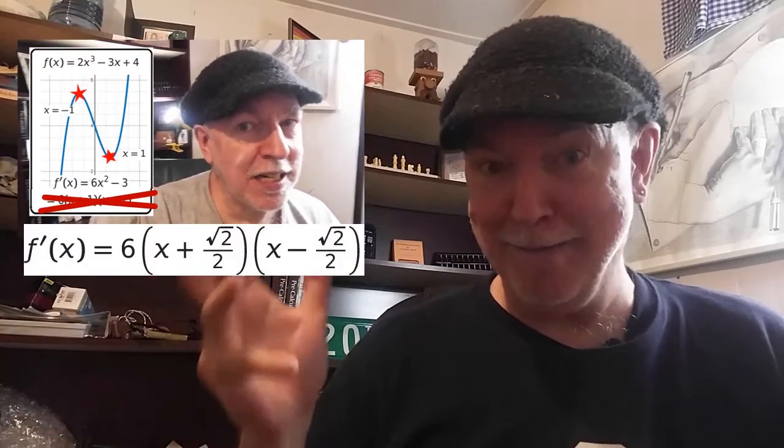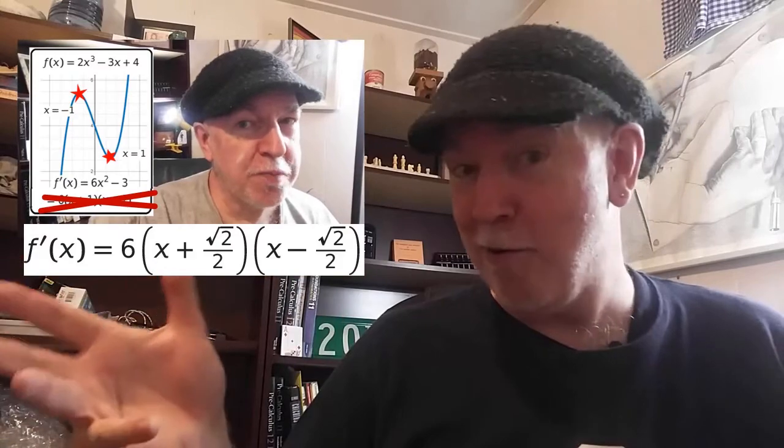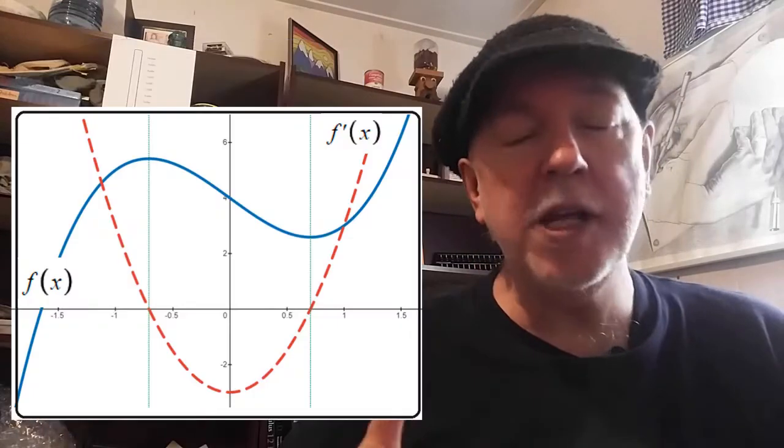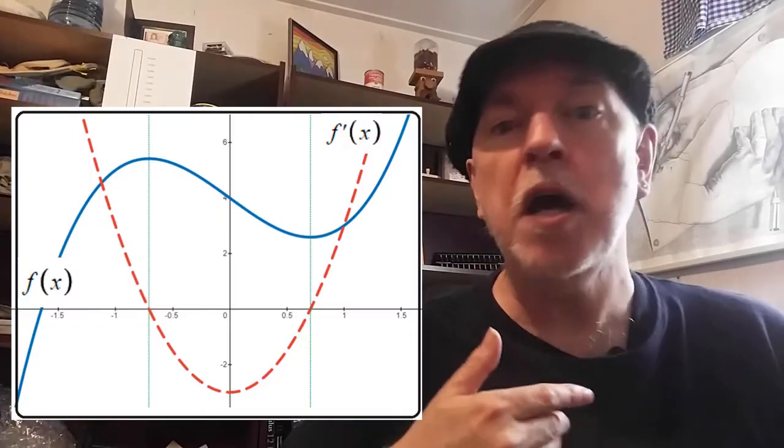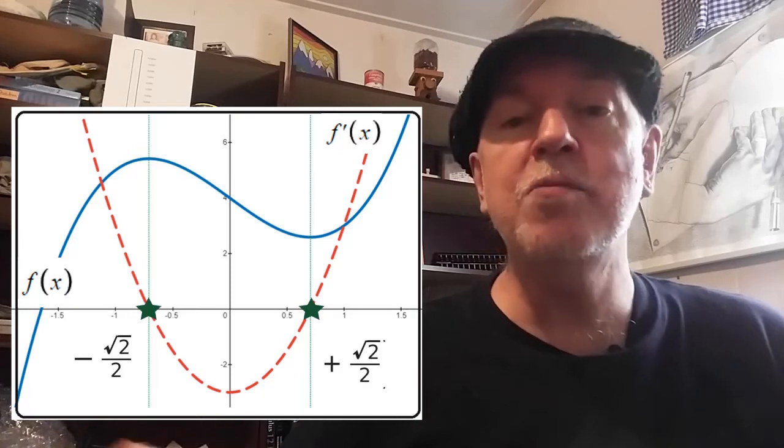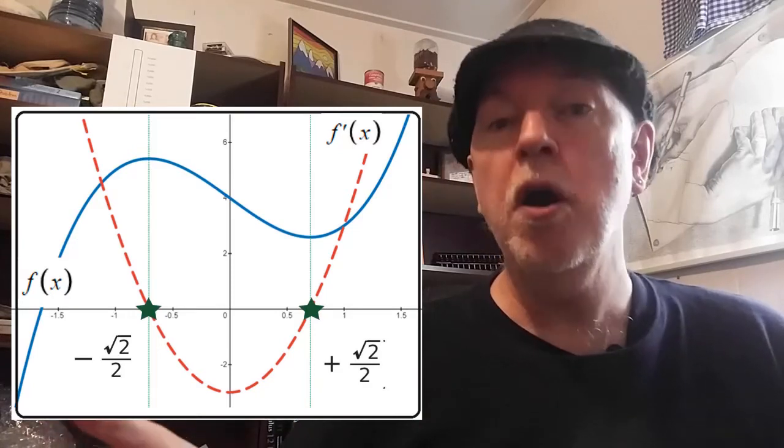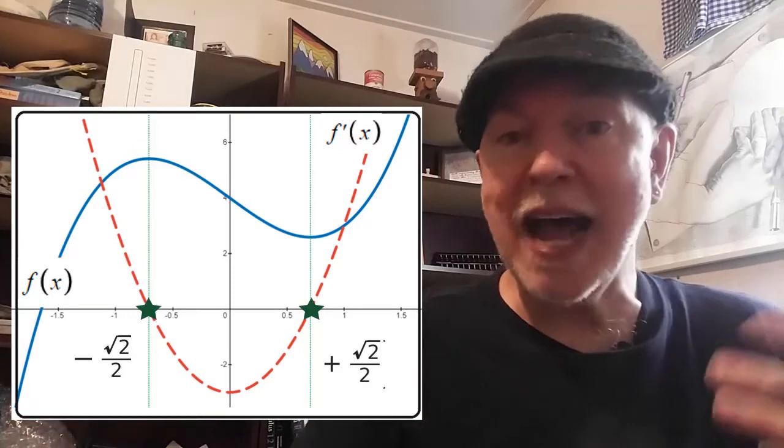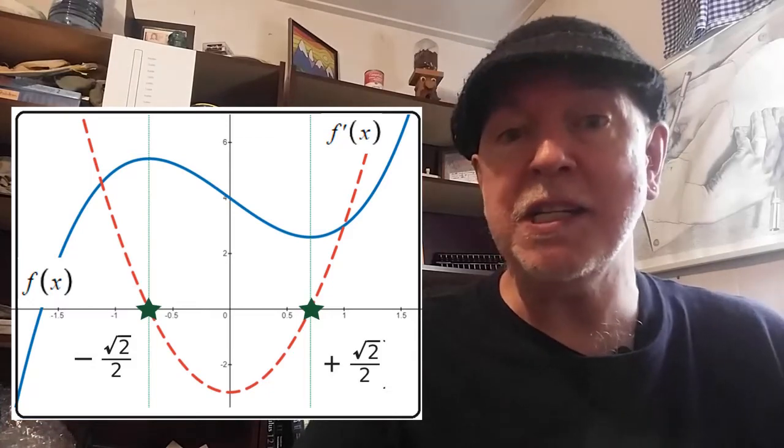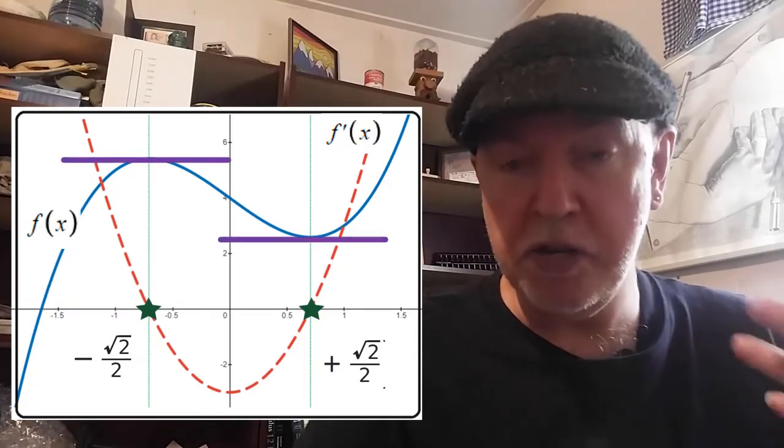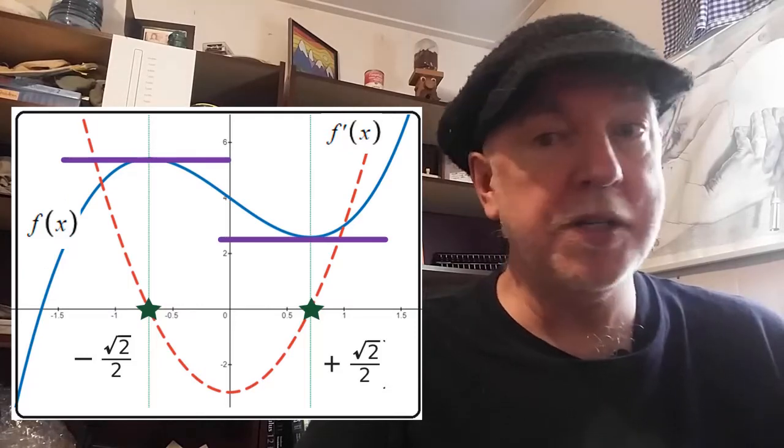Let's do what he suggests and create a sign table for the function from that previous video. We will also pretend that I calculated the zero correctly. Our points of interest are where x equals positive or negative the square root of 2 over 2. That's where the first derivative is zero and the tangent line to the function is horizontal.